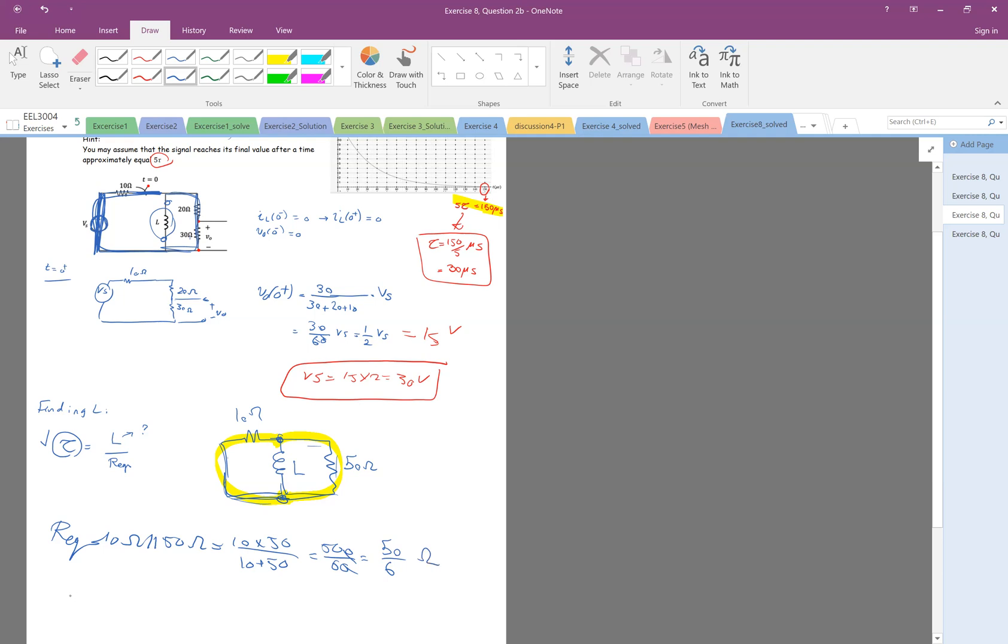And then tau, which is 30 microseconds, equals L divided by 50 over 6. So L is equal to 50 over 6 times 30 microseconds.